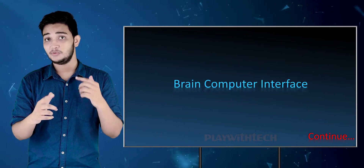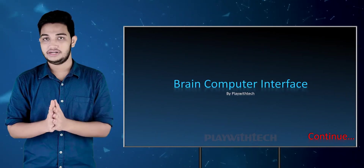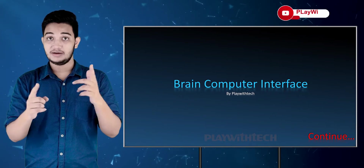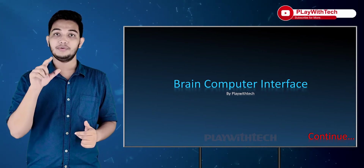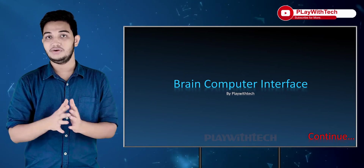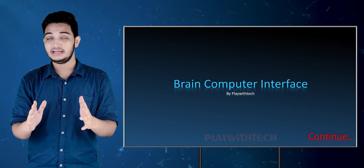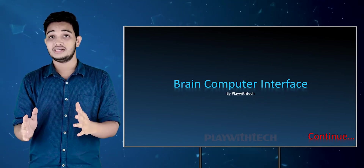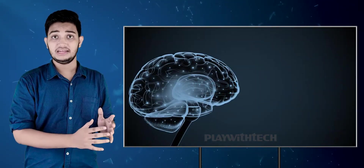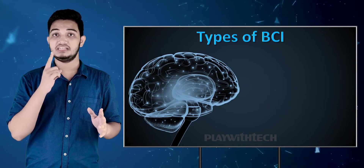Basically, BCI means that your brain signals can control things without any physical contact. For example, your brain signals can control a robotic arm — like hand movement — and that robotic arm moves accordingly. Similarly, a wheelchair can move: simply think about it in your brain and you will move the wheelchair. You can think about how much potential this technology has.